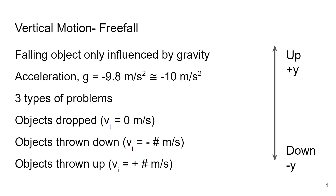Objects that are in free fall are only experiencing the influence of gravity. Gravity here on Earth exerts an acceleration of negative 9.8 meters per second squared, which for some examples we'll round to negative 10 just to make the math a little easier. Because the motion quantities we're dealing with are vectors, we'll indicate upward as positive and downward as negative, which is why acceleration — because it points down — is a negative value.